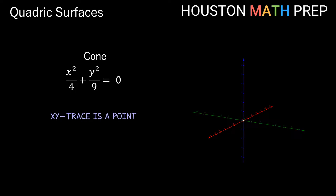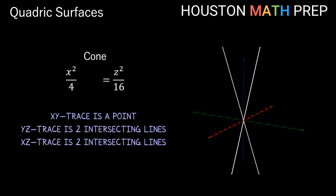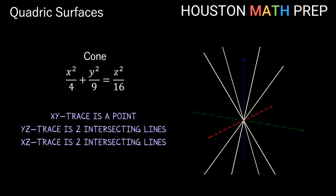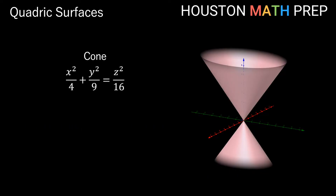For the xy trace of the cone, setting z = 0 gives two squares adding to zero, which only holds when x and y are both 0 — so the trace in the xy plane is just a single point at the origin. Setting x = 0 for the yz trace gives y² and z² terms equal to each other; solving for z yields plus/minus a linear equation — two lines intersecting at the origin. A similar result occurs for the xz trace. With all traces combined you can see we get a double cone with an elliptical cross-section.